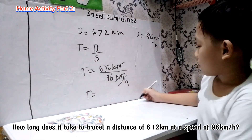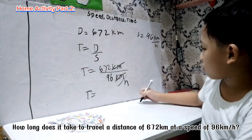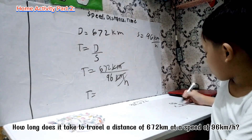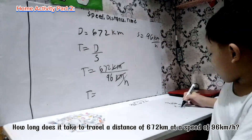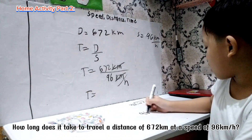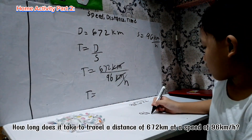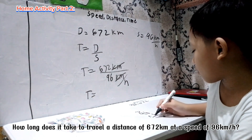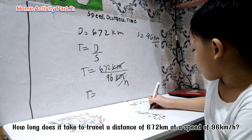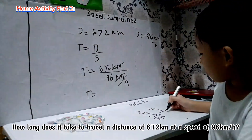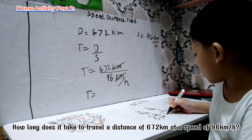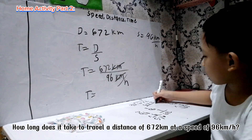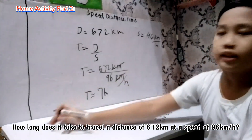We compute 672 divided by 96. Working through the division: 96 times 7 gives us 672. It takes 7 hours.